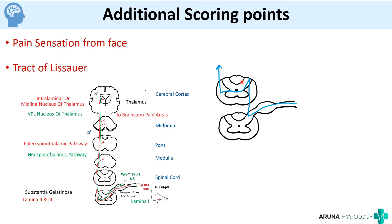These are some additional scoring points. For the lateral spinothalamic tract, concentrate more on the diagram: you should know where the first, second, and third order neurons are located, know the C and A-delta fibers, and know the origin, course, and termination. I hope this concept is clear. Thank you.